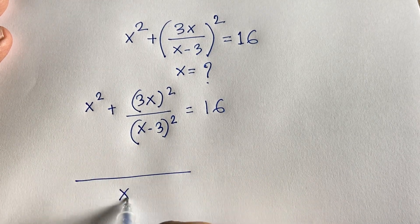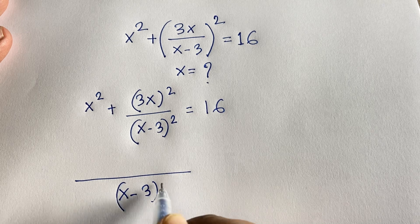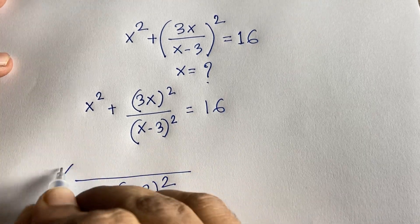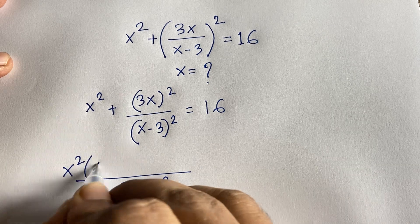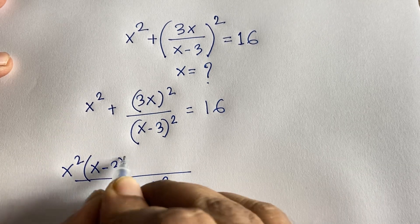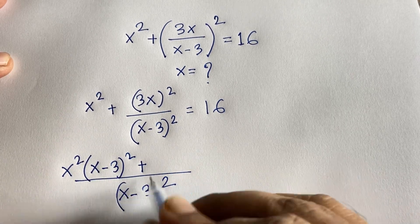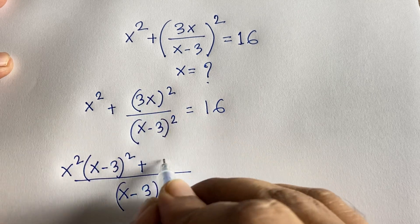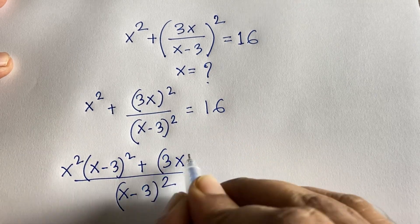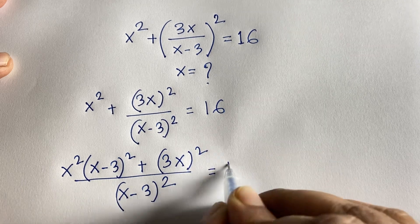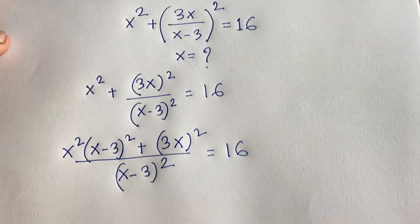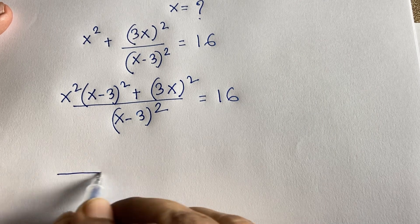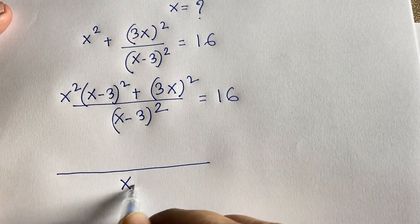So this becomes x² times (x-3)² plus 1 times (3x)² — since we multiply through by (x-3)² — all equal to 16. Here we have (x-3)² in the denominator.